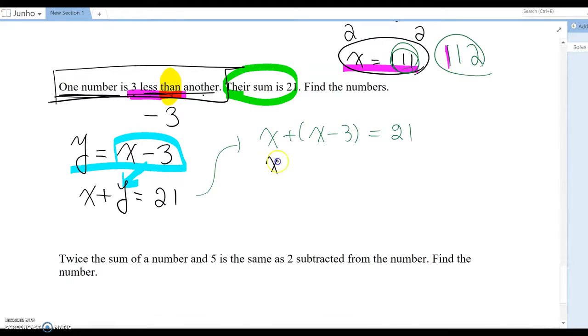Like the previous question, we open the parentheses now. So x plus x minus three equals 21. Now combine like terms, so 2x minus three equals 21. Now isolate the variable term, so I combine three with the variable term. This becomes 2x equals 24.